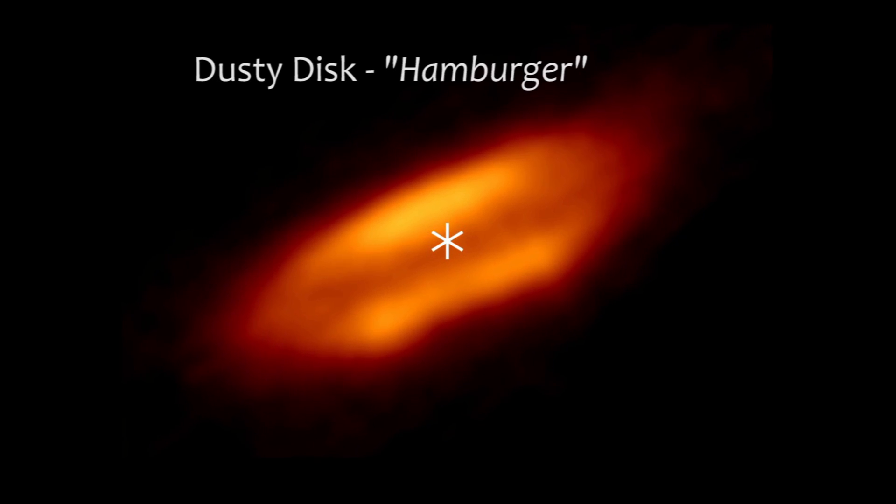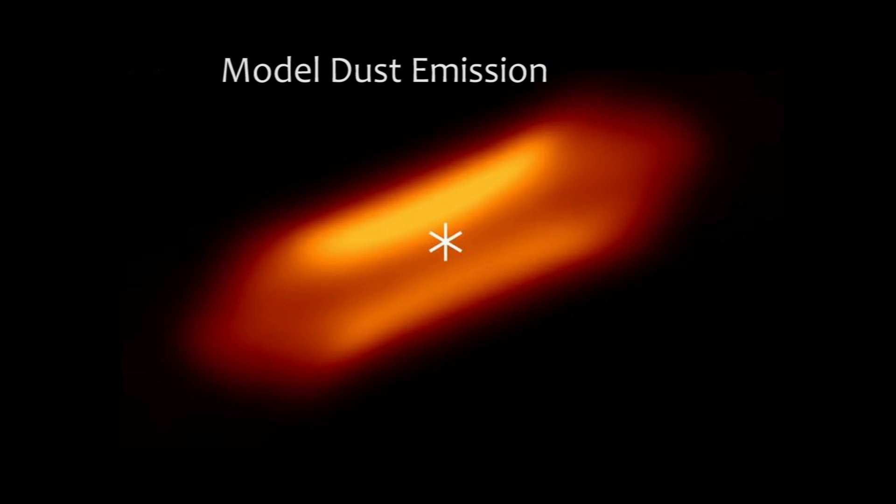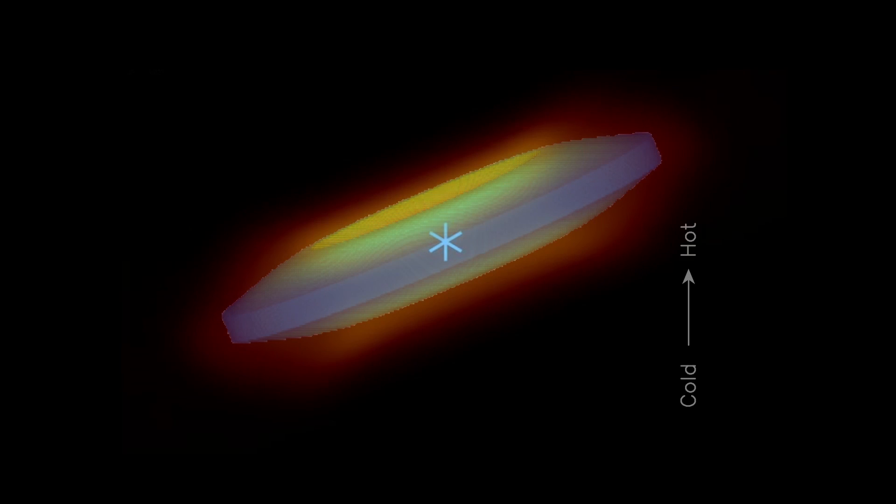The disk is nearly edge-on and has a radius of about 60 astronomical units. Interestingly, it shows a prominent dark lane sandwiched between two brighter features, due to relatively low temperature and high optical depth near the disk midplane.